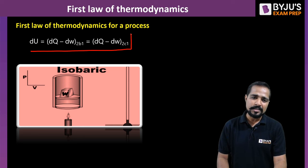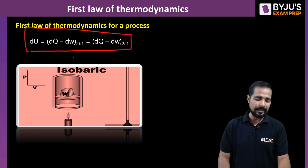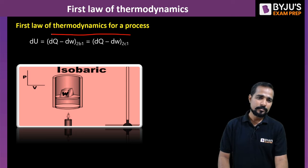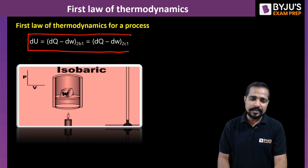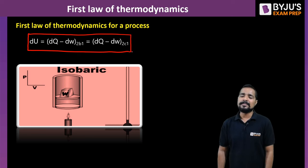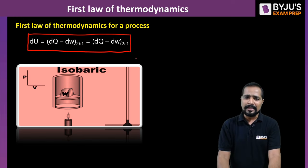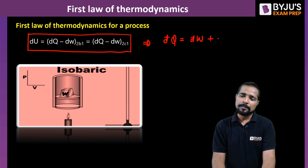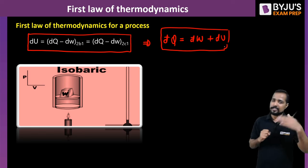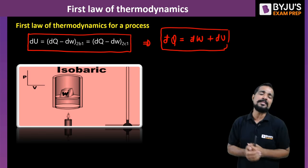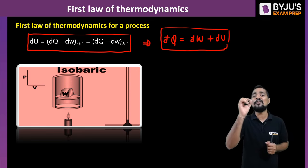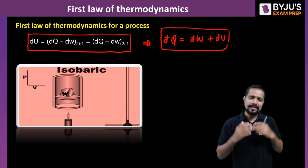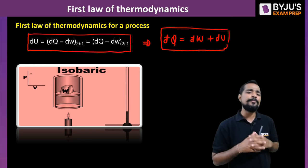For any thermodynamic process, we can write the relation: dU = δQ - δW, where dU is the change in internal energy of the system, δQ is the total amount of heat transfer supplied to the system, and δW is the work done by the system. Reformulating this equation: δQ = δW + dU. Let's try to understand exactly the meaning of this using a small experiment.